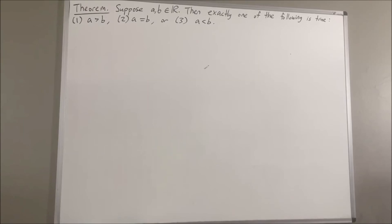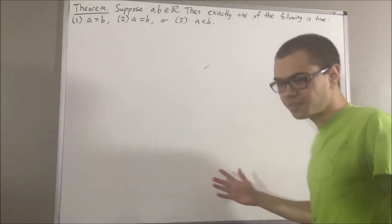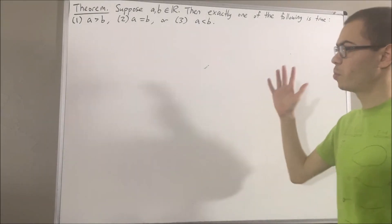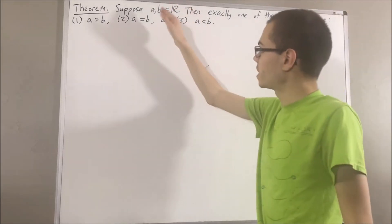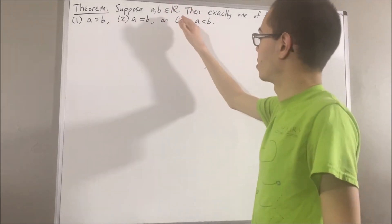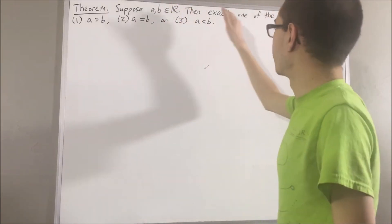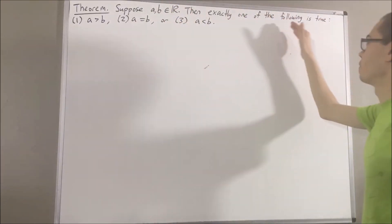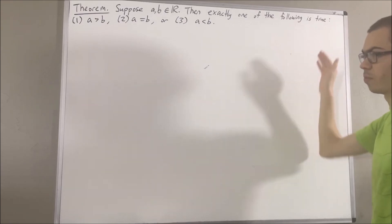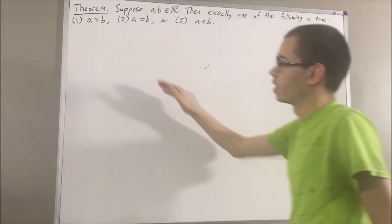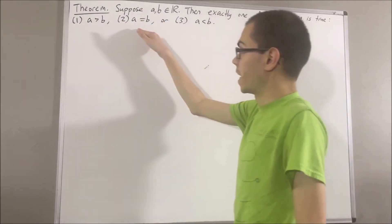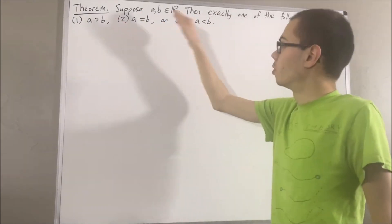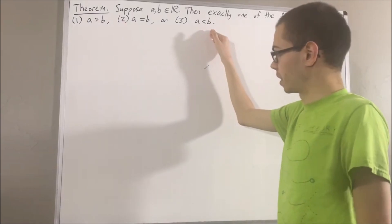Hello! In this video, we are going to prove the following theorem. Suppose A and B are real numbers. Then exactly one of the following is true: A is greater than B, A is equal to B, or A is less than B.